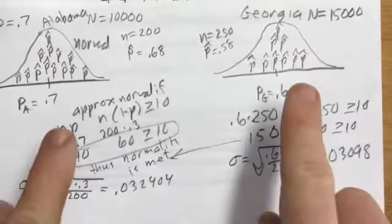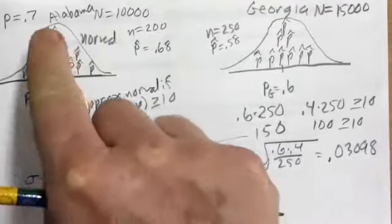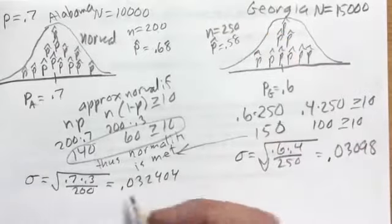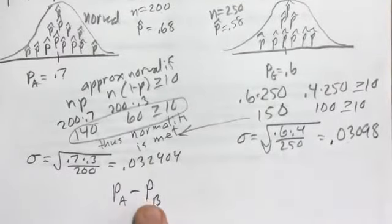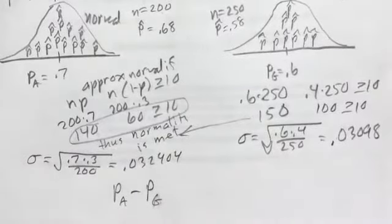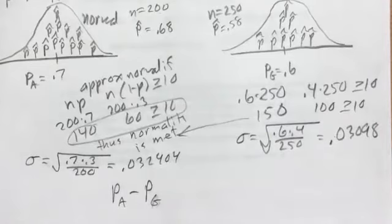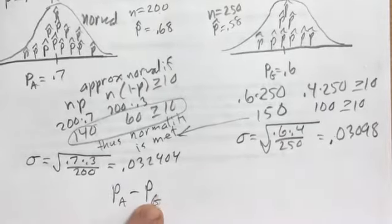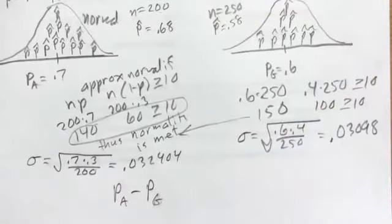Now we've got two samples, and what we're interested in is the difference. This company wants to know the difference between their Alabama and Georgia franchises in terms of the proportion of happy customers — that is, P_A minus P_G. In statistics we're very interested in differences: the proportion who got better on a drug vs. placebo, students who passed a test with vs. without a program, trees that got fertilizer vs. those that didn't, and so on.